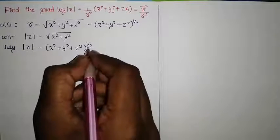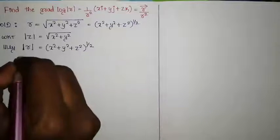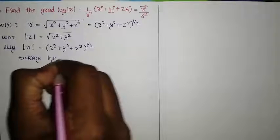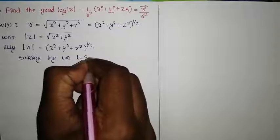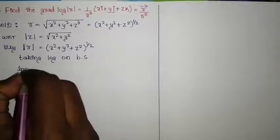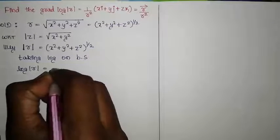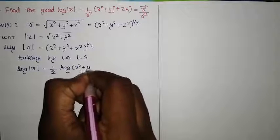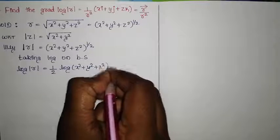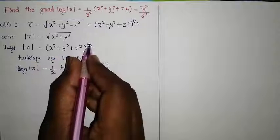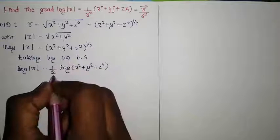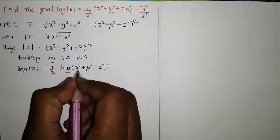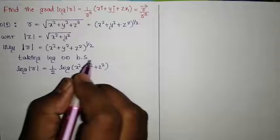Taking log on both sides, this gives log|r| equal to 1/2 into log(x² + y² + z²). Applying the logarithm rule log(m^n) = n·log(m), that is why we write 1/2 into log(x² + y² + z²).